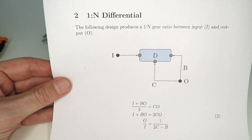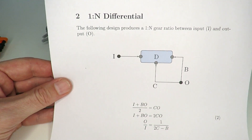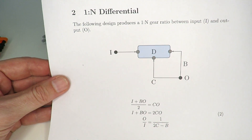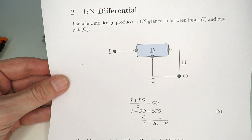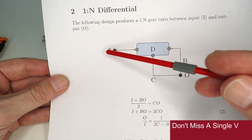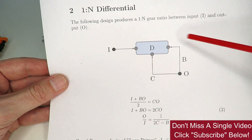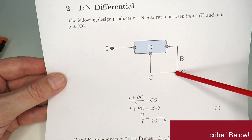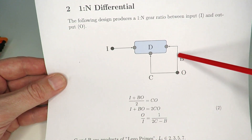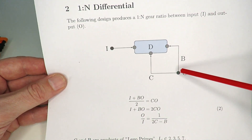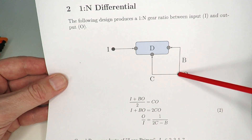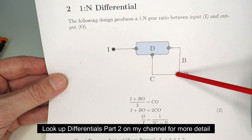In part 2 I presented solutions for the 1-to-n differential problem where n is prime. Here we've got a differential with an input axle, an output axle, and a connection between the output with a gear ratio of B back to this axle.